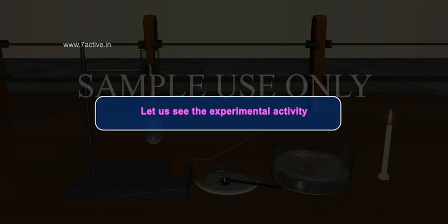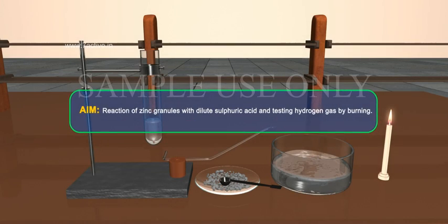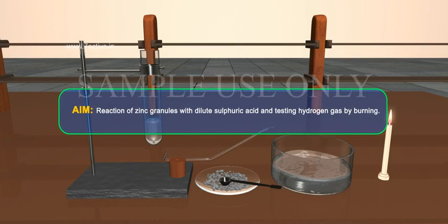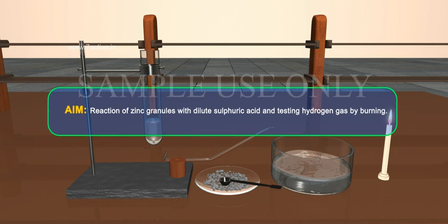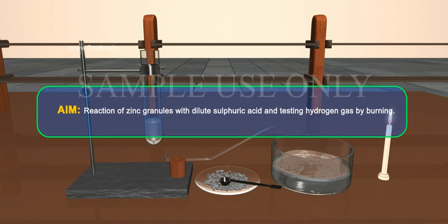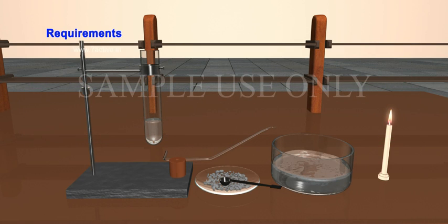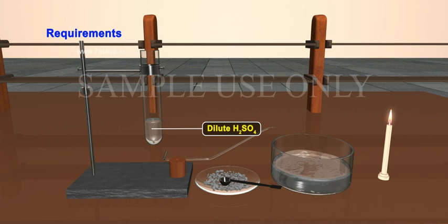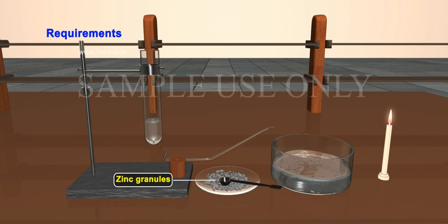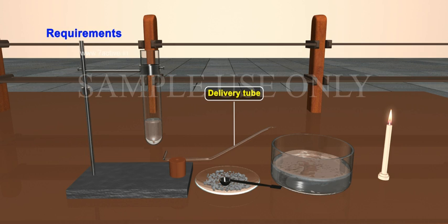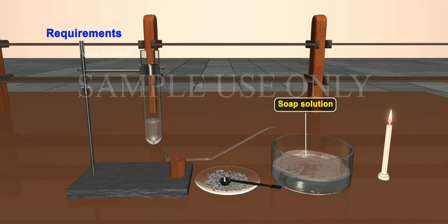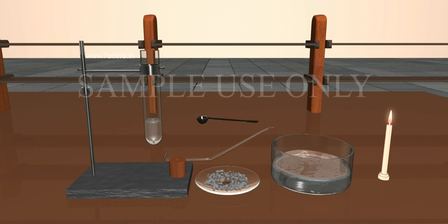Let us see the experimental activity. Aim: Reaction of zinc granules with dilute sulfuric acid and testing hydrogen gas by burning. Requirements: test tube stand, dilute H2SO4, zinc granules, delivery tube, tub, soap solution, and candle.